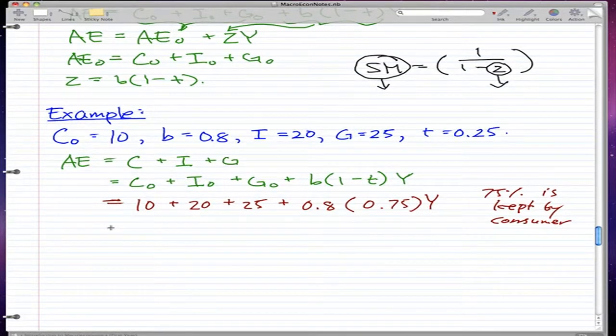So, if we add this all up, we get 55 plus 0.6Y, and that is how we get our AE equals AE0 plus ZY.